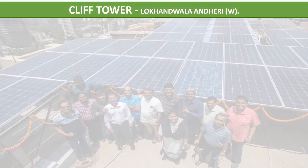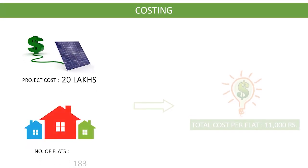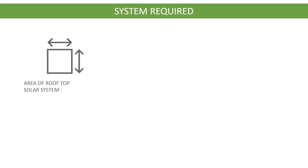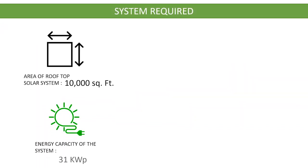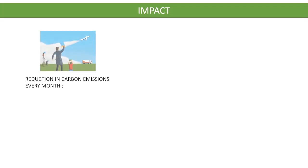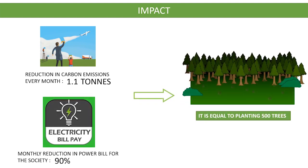Let us look at an example: Cliff Tower, Lokhandwala, Thakur West, Mumbai. The cost of the solar project is 20 lakh rupees for 183 flats, making the per-flat cost just 11,000 rupees. The area required is 10,000 square feet and the system capacity is 31 kilowatts, requiring 100 solar panels. This solar system reduces 1.1 tons of carbon emissions every month and reduces 90% of power bills for common areas — equivalent to planting 500 trees.